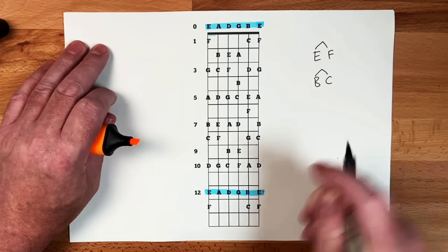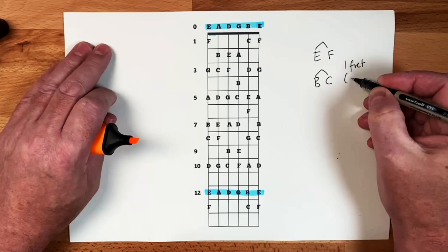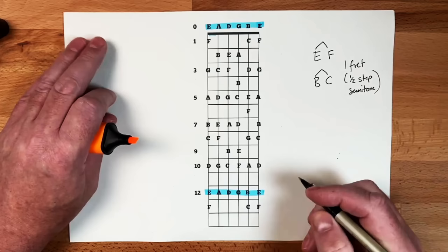These are one fret apart. That is also known as a half step. Let's get these fancy words in. Or in English money, that's also called a semitone. So we can have that a fret, a half step or a semitone.